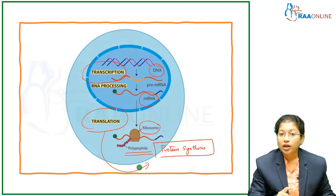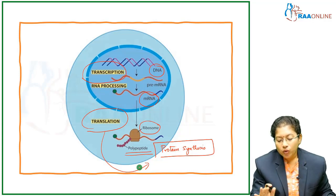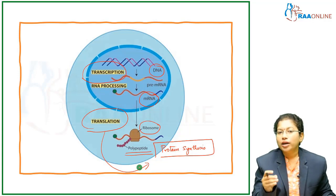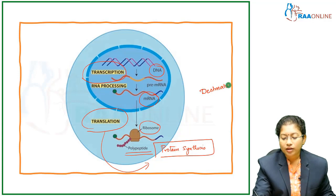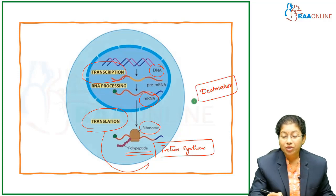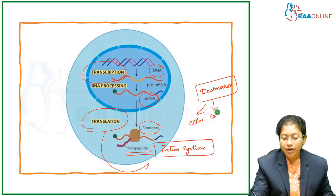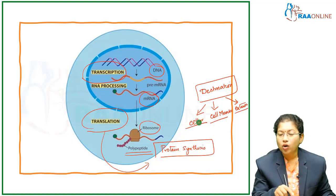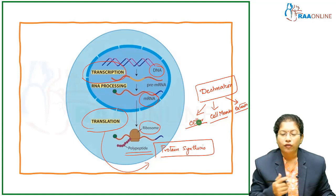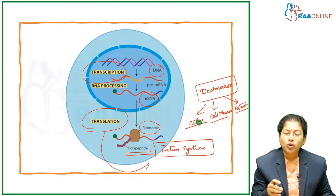Our topic is protein targeting and sorting. We have synthesized a protein, but it has to go to its location — it has to move to a specific destination. The destination may be the cell organelles, the cell membranes, or the exterior of the cell. The protein moves either to the cell organelles, the membrane, or it is expelled to the exterior of the cell. These are the various protein destinations.